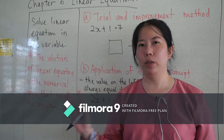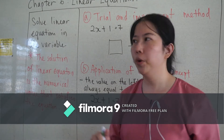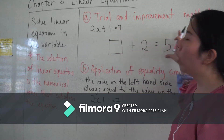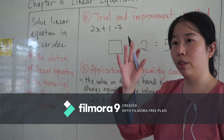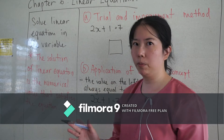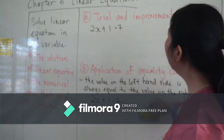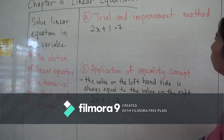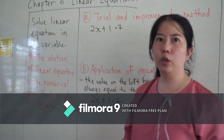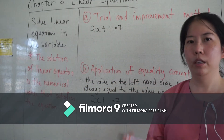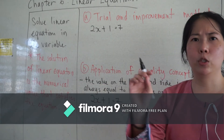We will see three methods that are important for you today — how to think and how to solve the problem. The first one is the trial and improvement method. The linear equation we will use is two x plus one equals to seven.